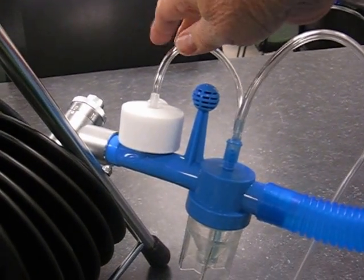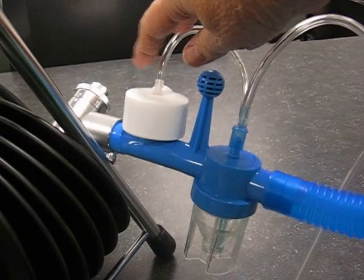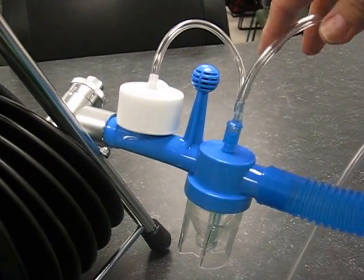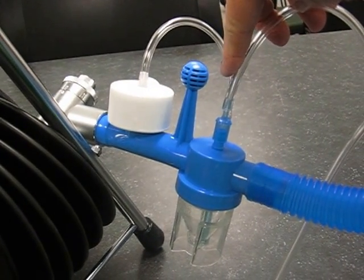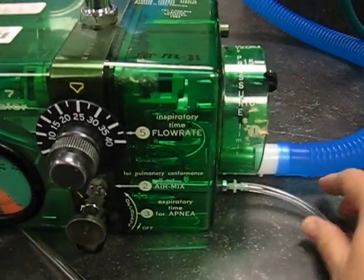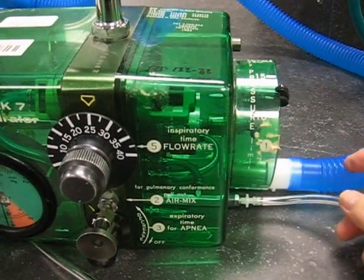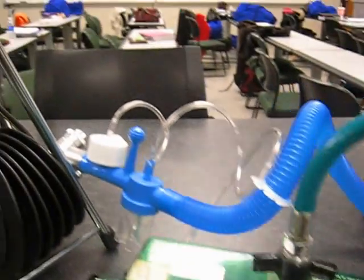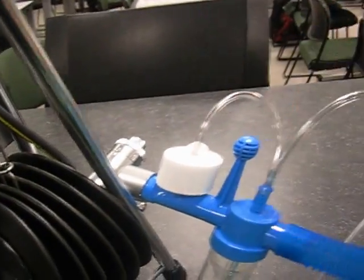If you noticed, this line right here goes to the mushroom valve, which is closed during inspiration. This line right here goes to the small volume net. This is the main hose that goes back to the pressure side of the ventilator. And this right here is the other end of the drive line that ran to these two lines here. They tie in together.